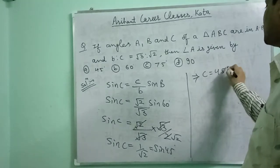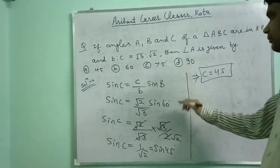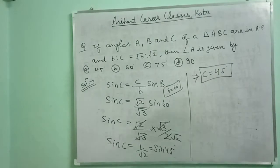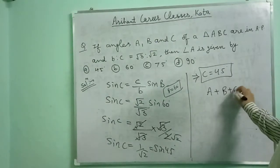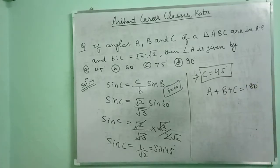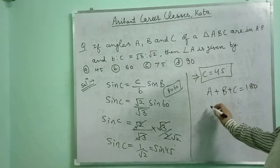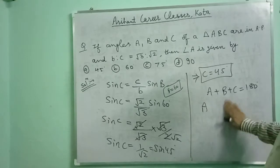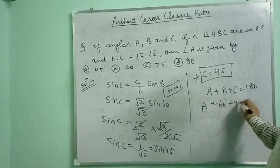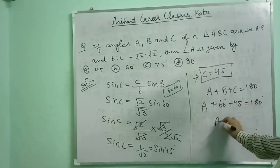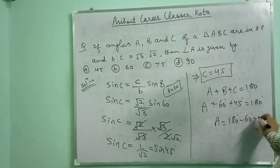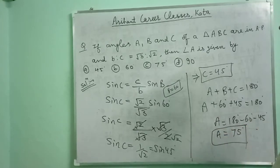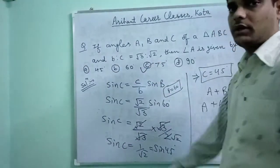Therefore C is equal to 45 degrees. Now B is 60 degrees and C is 45 degrees. Since A plus B plus C equals 180 degrees, A equals 180 minus 60 minus 45 equals 75 degrees. So angle A is 75 degrees, that is option number C.